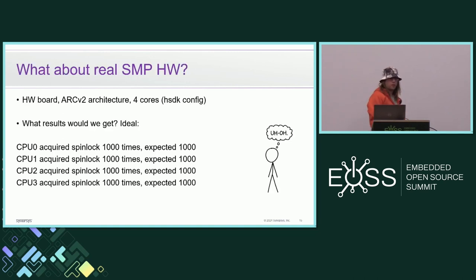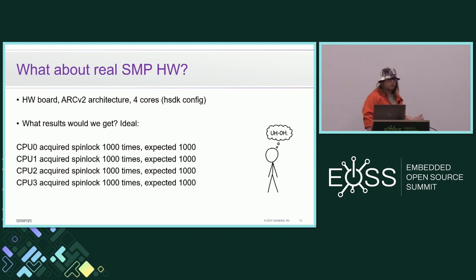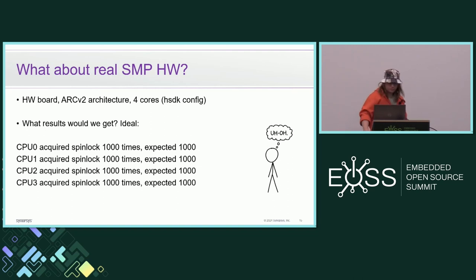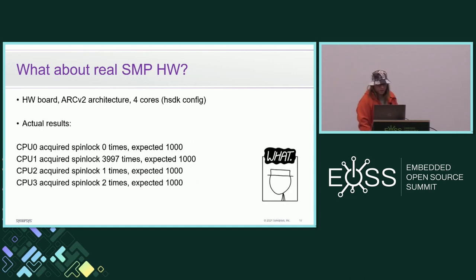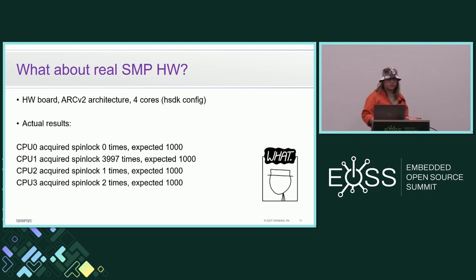But what would happen if we run it on real hardware? We took an HDK board which has four RV32 cores and ran the test on it. Unlike our simulator, real hardware can execute all the stuff in parallel since there are four physical cores, so you might expect ideal or near-ideal fair results. But what actually happened was that one core took almost all the spinlocks and all other cores were starved — pretty interesting and unexpected results.